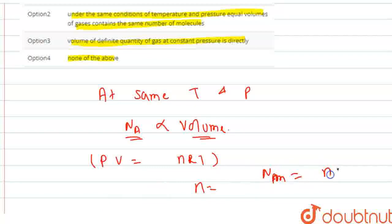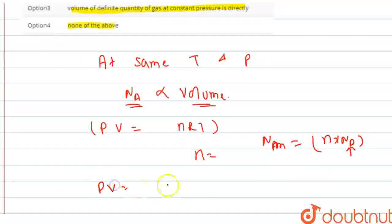This is number of moles into NA. Right. So PV is equal to... Right.